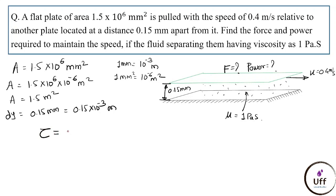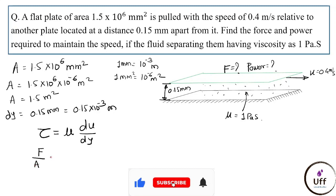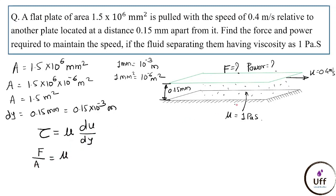By Newton's law of viscosity: τ = μ(du/dy), where τ = F/A. The bottom plate is stationary (u₁ = 0) and the top plate moves at 0.4 m/s (u₂ = 0.4 m/s), so du = 0.4 m/s.